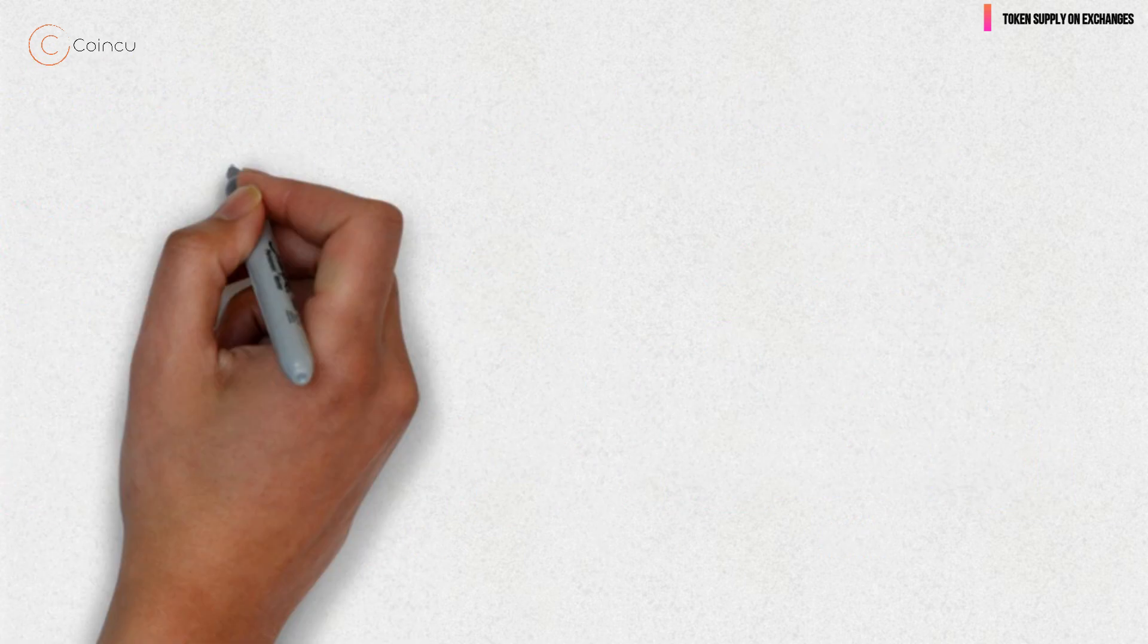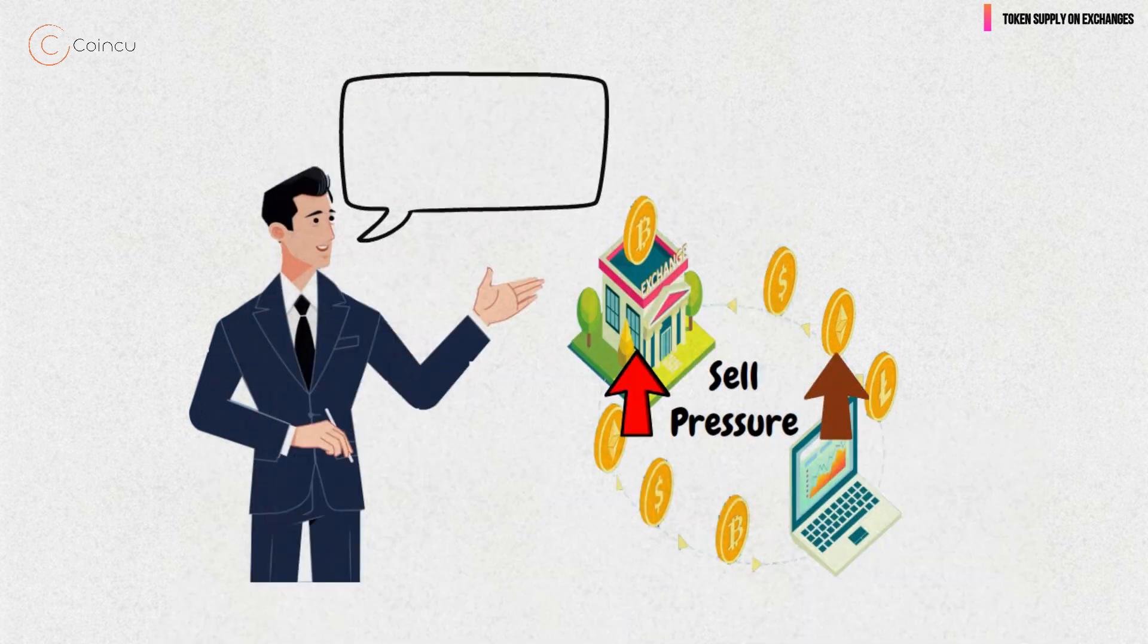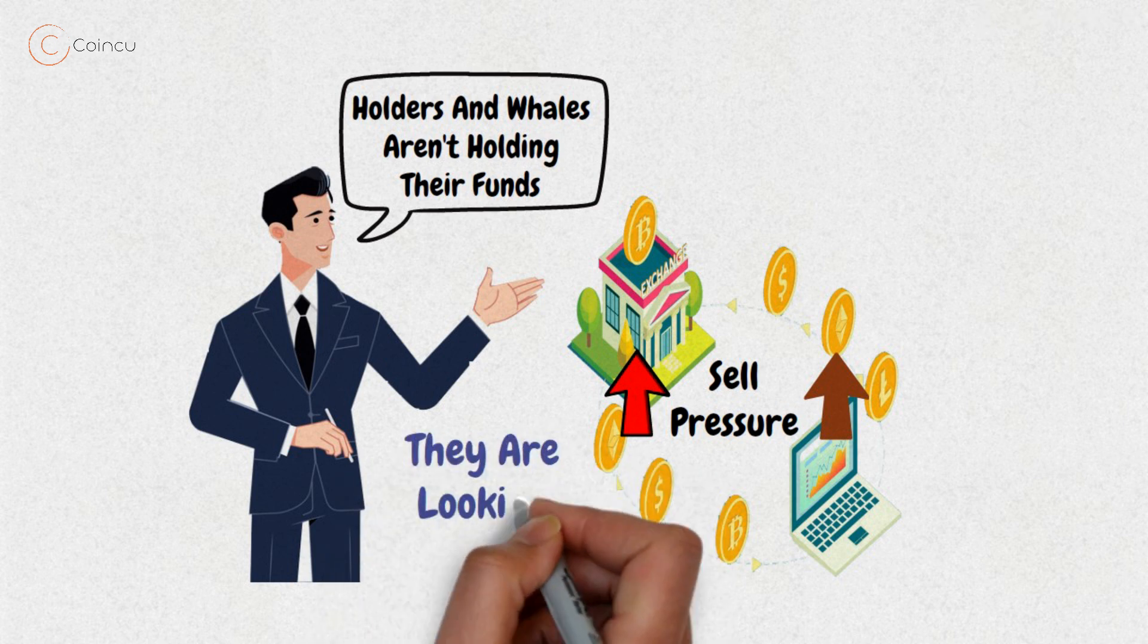Here's a simple assumption about token supply. When there are a large number of tokens on exchanges, sell pressure may be higher. Since holders and whales aren't holding their funds in their own wallets, it could be likely that they are looking to sell them.